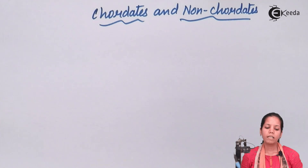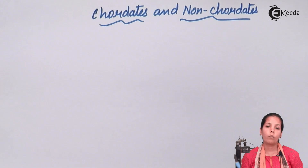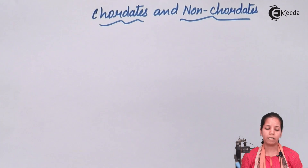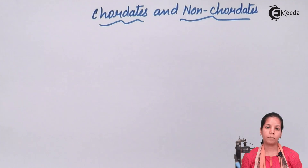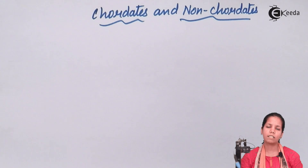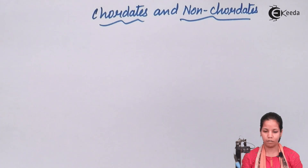Limbs in chordates are two pairs, whereas in non-chordates limbs may be more than two pairs. If a heart is present, it is dorsal in non-chordates, whereas in chordates it is always in a ventral position.